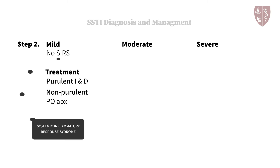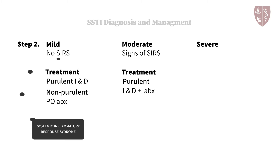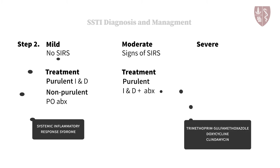Patients with typical SSTIs, together with signs to suggest a systemic inflammatory response, have infections of moderate severity. The guidelines recommend that patients with purulent SSTIs of moderate severity be managed with I&D plus empiric oral antibiotics with activity against MRSA, namely trimethoprim-sulfamethoxazole, doxycycline, or clindamycin.